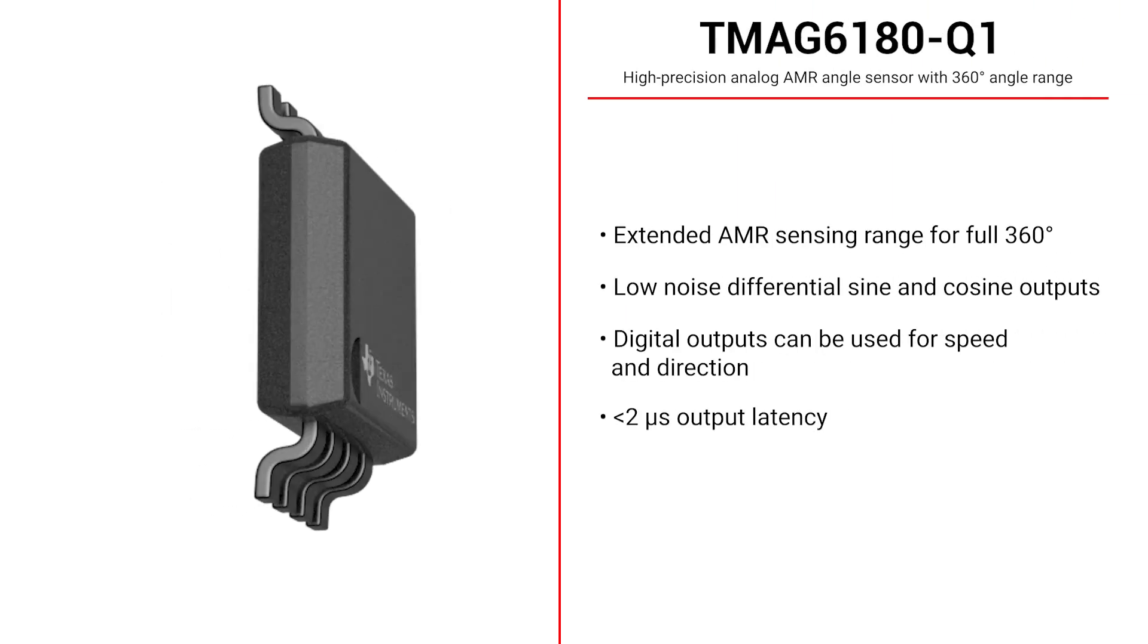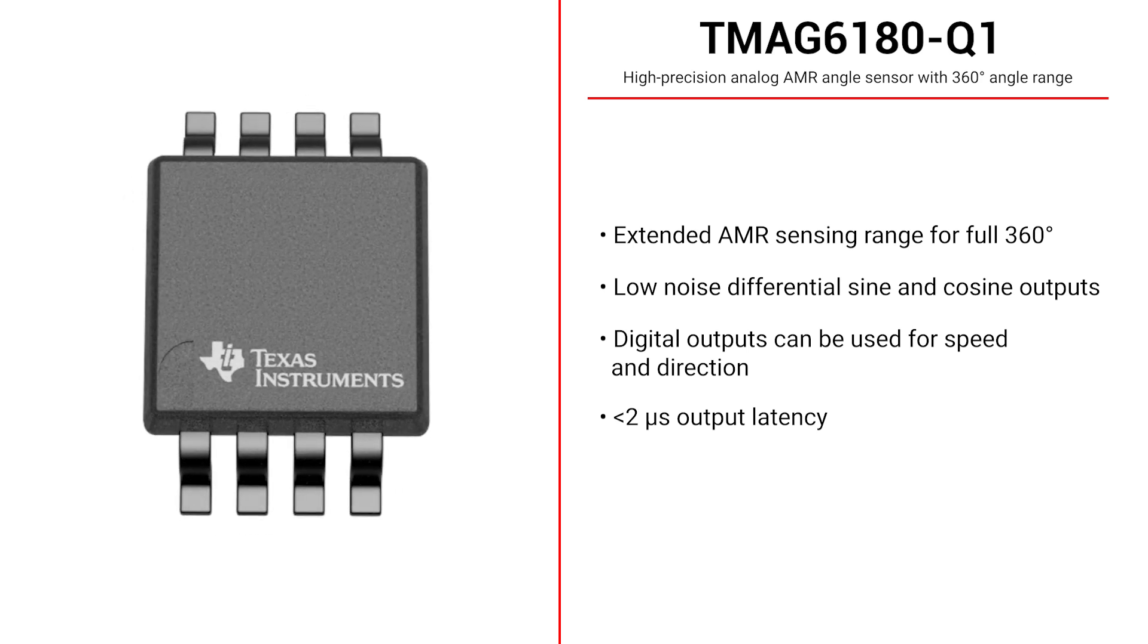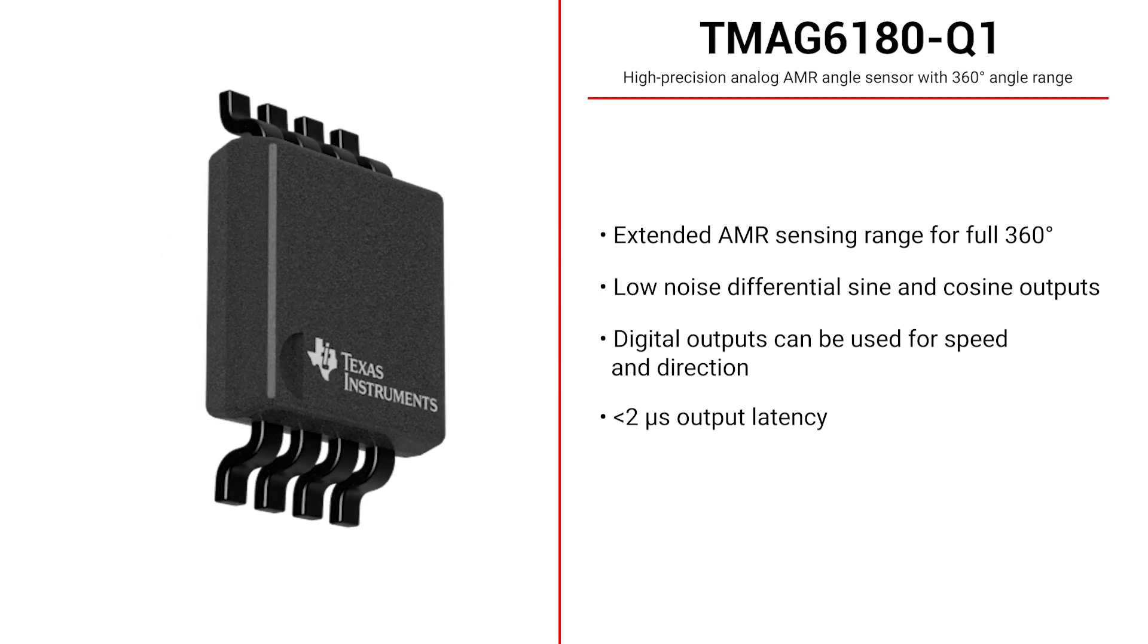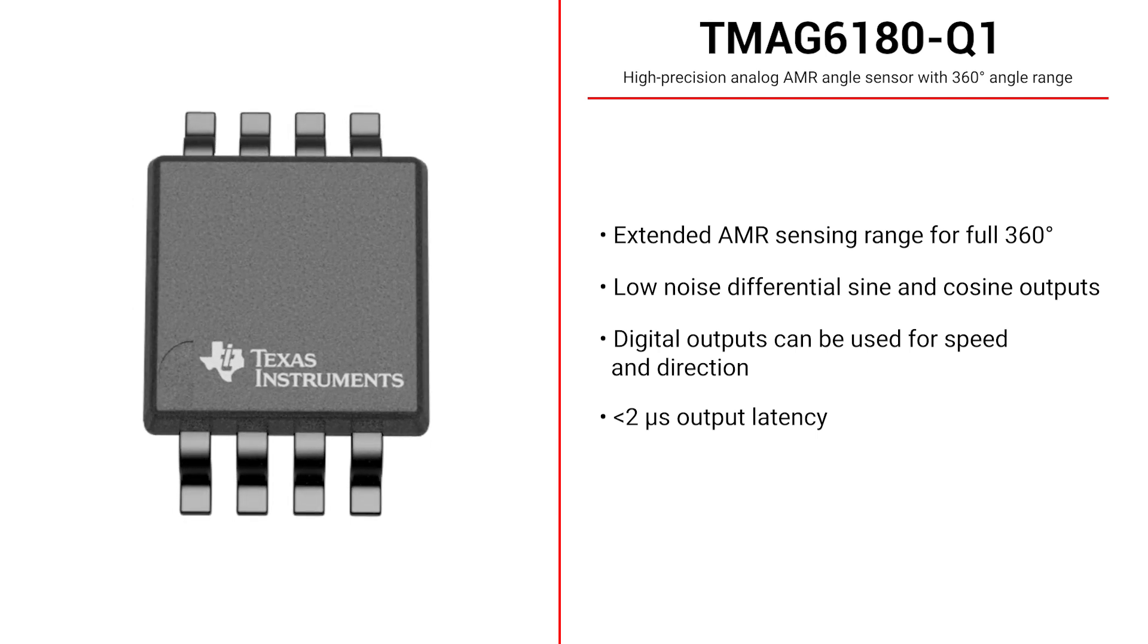TMAG-6180Q1 is an AMR sensor that features low noise differential sine and cosine outputs. TMAG-6180Q1 achieves a full 360 degree measurement range using an integrated 2D Hall Effect Latch to resolve quadrature. The Hall Effect outputs can also be used to actively track rotation speed and direction.